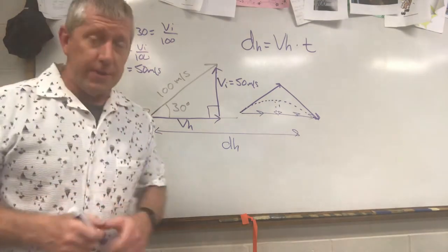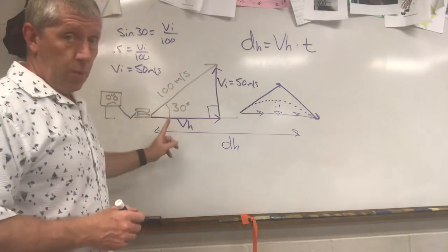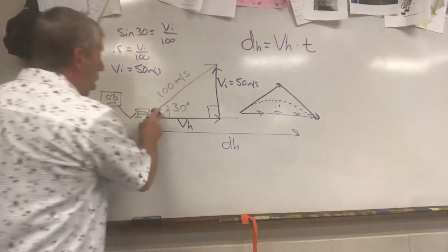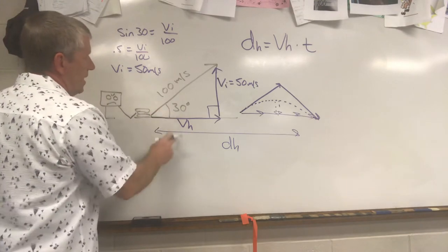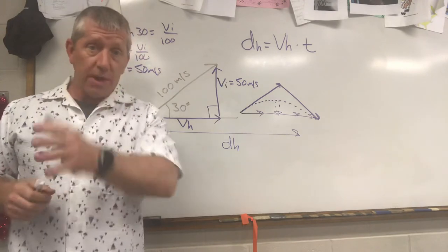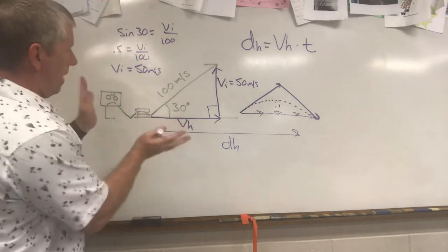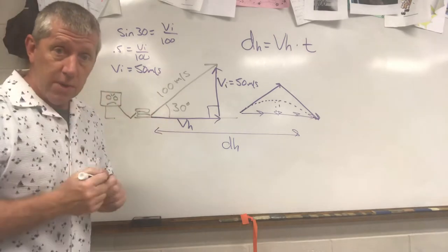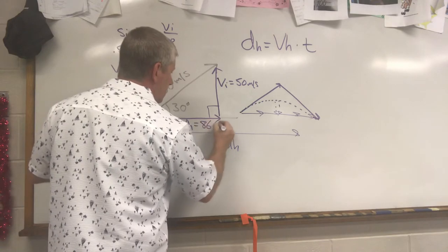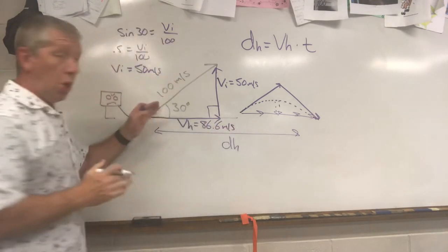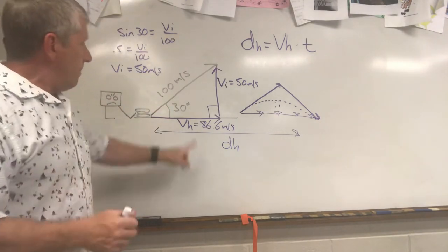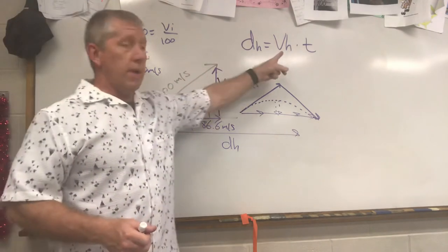Let's figure out the horizontal velocity. That won't change the whole trip. That's going to be the cosine, adjacent side, cosine of 30. VH over 100. The cosine of 30 is 0.866. So if I take 0.866 and multiply it by 100, I get 86.6 meters per second using the cosine function adjacent over hypotenuse. That won't change. I can now put that right in here.